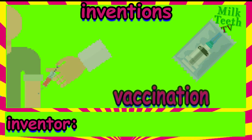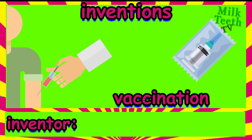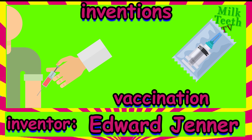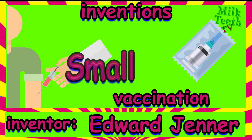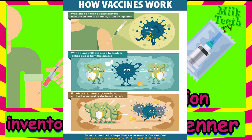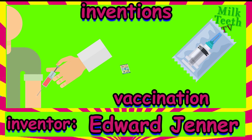This is a vaccination. You all must be knowing about it, especially since it's the coronavirus time. It was first invented by Edward Jenner — the first vaccination was for the disease smallpox. Here is how a vaccination works: weak or dead bacteria are introduced into the patient's body by injection. White blood cells are triggered to produce antibodies to fight the disease. Next time the patient encounters the same bacteria, the antibodies neutralize the invading bacteria or virus and protect the patient from the disease.